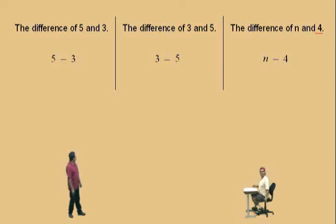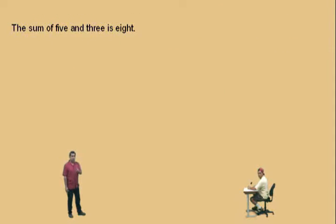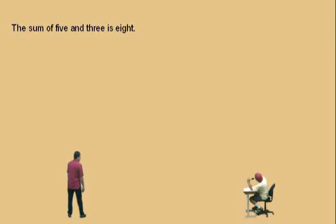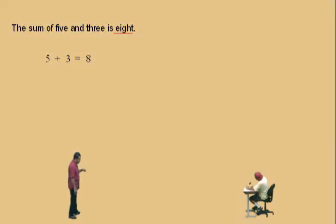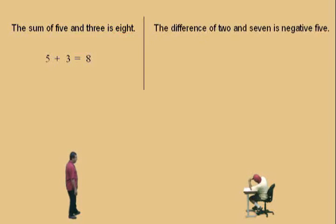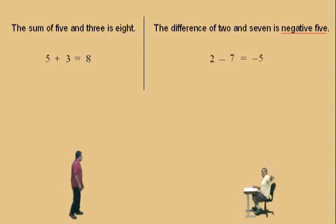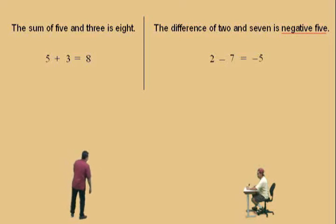Here's our next example. Now in here we're going to bring in an equal sign. Remember, the word 'is' means equals. Watch this. Okay, Charlie, go ahead and read and let the microphone do its job. The sum of five and three is eight. Right there is the sum of five and three and it's equal to eight. Very nice, Charlie. Let's do another one. The difference of two and seven is negative five. Yes, the difference of two and seven is negative five.